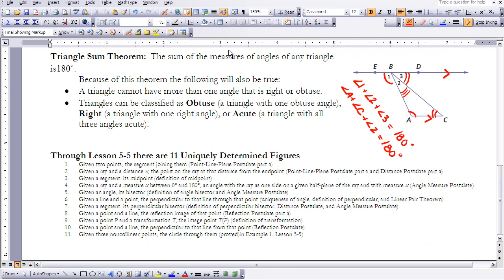The last piece to your notes in lesson 5-5 is just a list of 11 different situations in which your figure would be uniquely determined. We'll talk more about this in class and we'll spend some time working through some examples. So, this concludes lesson 5-6.